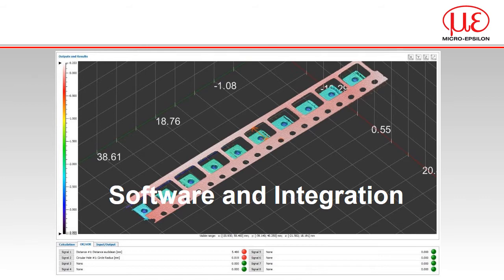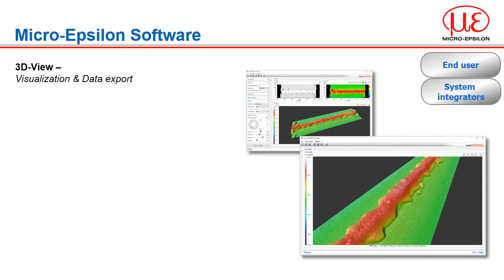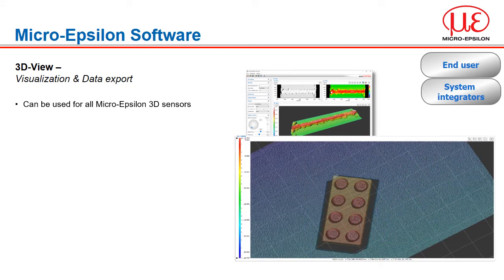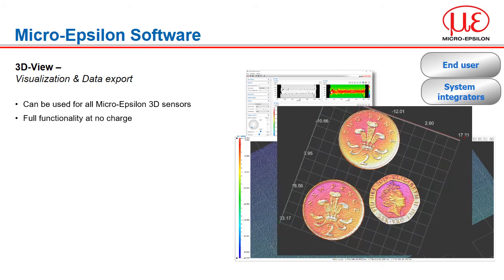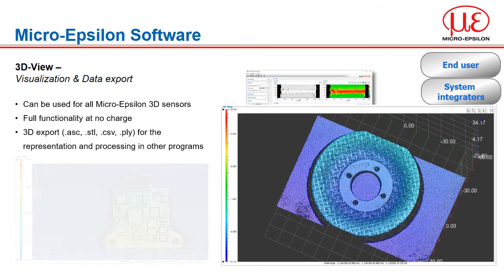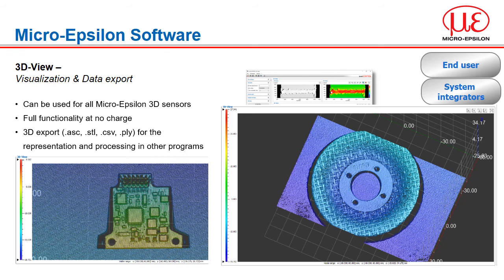Configuration and setup of the sensors is all done through the software we provide. MicroEpsilon 3D View is our visualization and data export software for use with all of our 3D sensors. It gives the ability to view online or offline sensor data in 3D with the XYZ points represented by a customizable color scaling palette and is provided free of charge. It allows for 3D export in ASCII, STL, CSV and polygon file formats for further processing in other programs. MicroEpsilon 3D View is therefore suitable for everyone to use with the sensors.